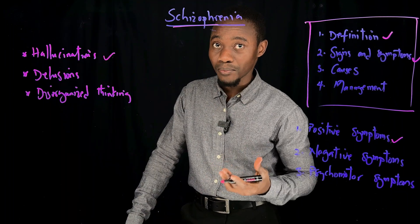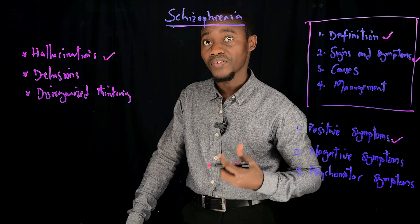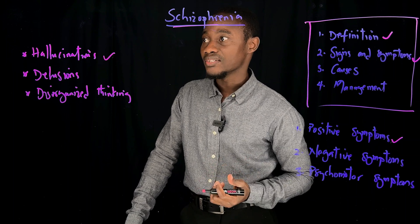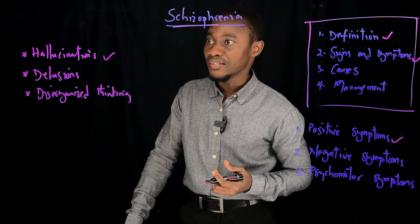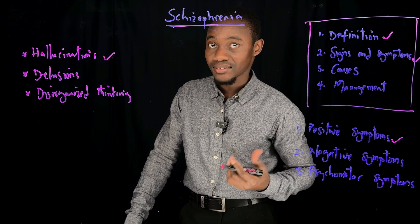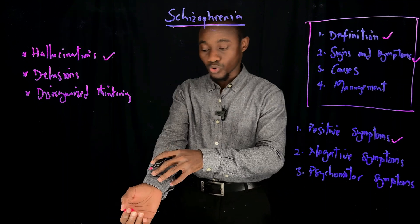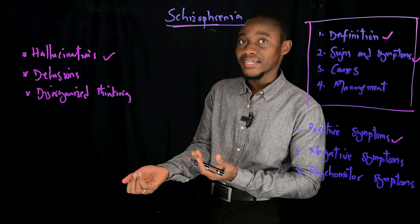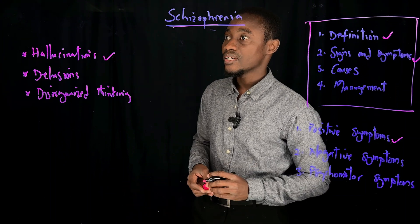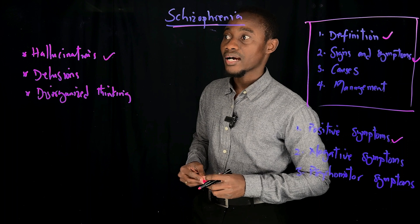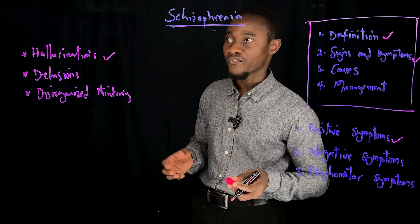Hallucinations are false sensory perceptions that occur without the presence of a stimulus. A typical example is hearing voices when nobody is really speaking to you. Alternatively, you can be seeing things although there is nothing there to be seen. For some people, they may feel like insects crawling on or under their skin where, in fact, there is nothing there to be felt. Hallucinations can be visual, auditory, gustatory, olfactory, or tactile.